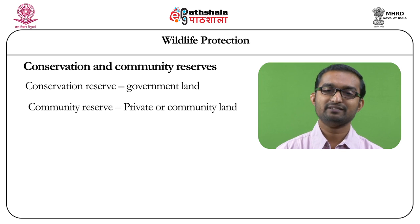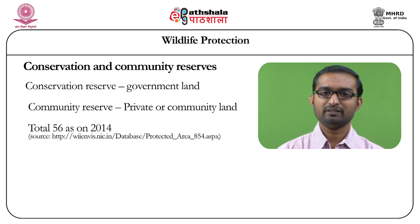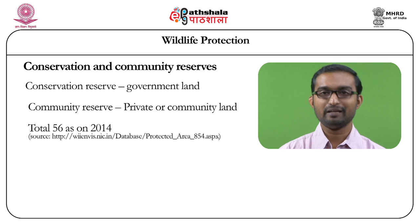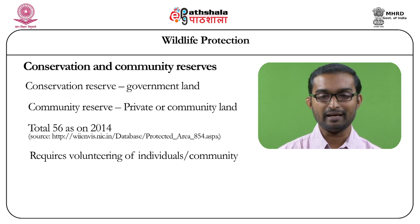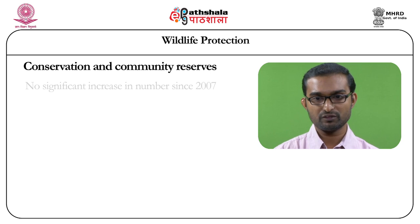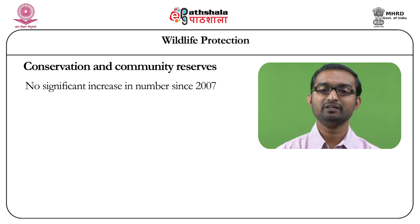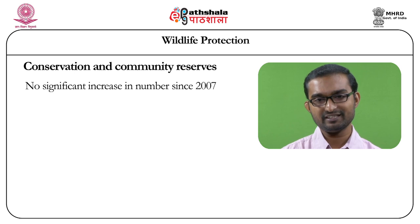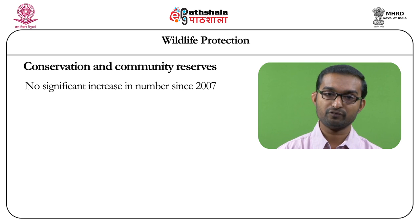As of 2014, there are a total of 56 conservation reserves, whereas there are only 4 community reserves. This indicates that community reserves are very difficult to implement, probably because they require consent from private or community landowners. All four community reserves were notified in 2007, and since then there have been no new community reserves, whereas conservation reserves show a consistent increase.